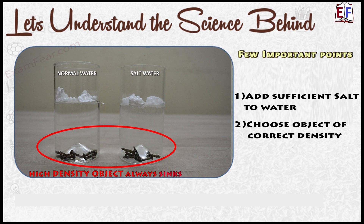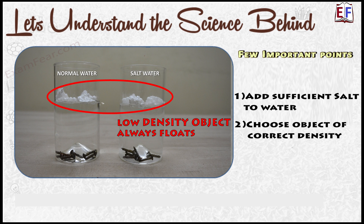If you take a very heavy object, its density will be very high and the downward force will be greater, so it will sink. On the other hand, if you take something very light — like a small piece of paper or thermocol — its density is too low and it will float in normal water anyway. So it is very important to choose an object with the right density: one that doesn't float in normal water but does float in salt water. Try out different types of beans or other objects to see which ones float in salt water.